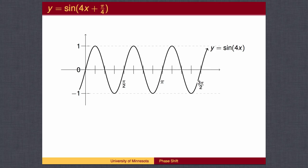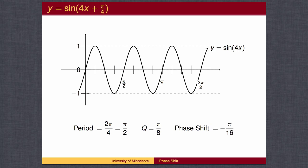Returning to the unshifted graph, the period is pi over 2. To mark the standard points, we find the quarter marks by dividing the period by 4. The quarter marks happen every pi over 8. The sine wave is at the top at pi over 8, back to the middle at pi over 4, at the bottom at 3 pi over 8, and back to the middle at pi over 2. The phase shift is negative pi over 16. To mark the x-axis, we find a common denominator between the quarter marks and the phase shift. In this case, the common denominator is 16, so we mark the x-axis every pi over 16.